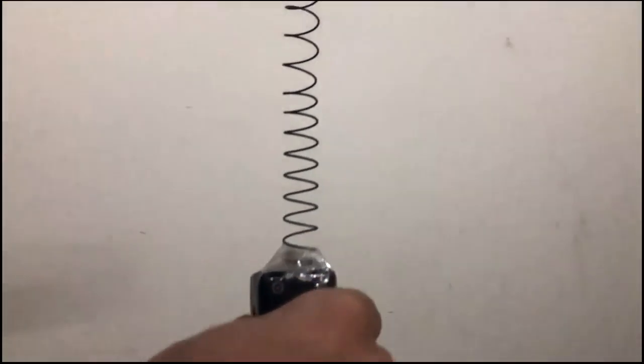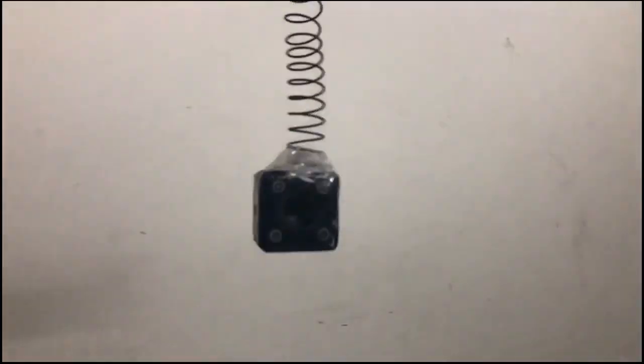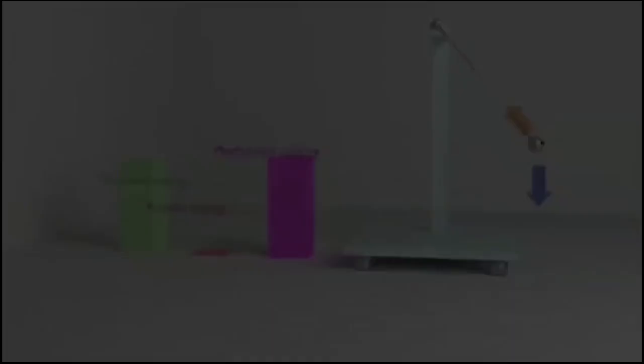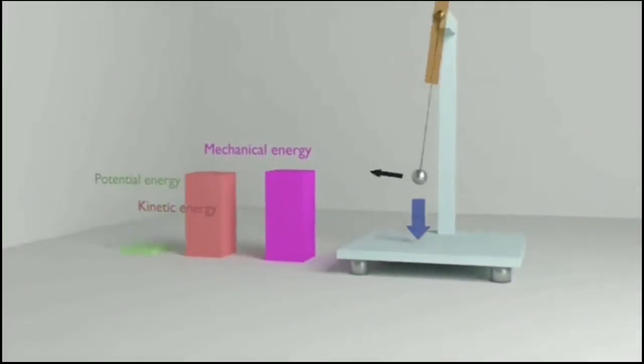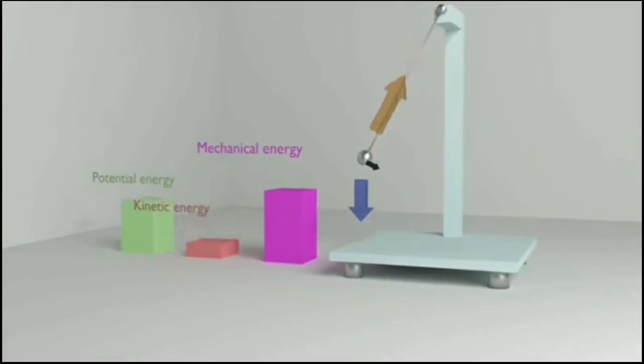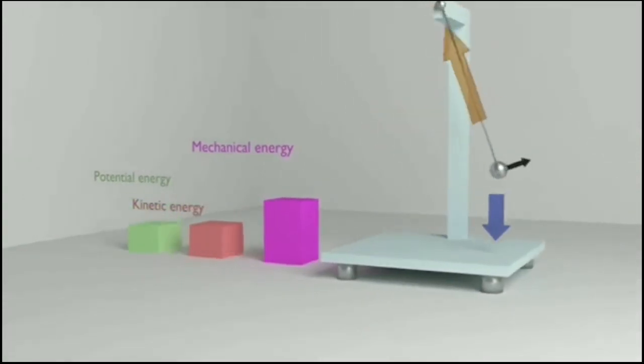In a damped oscillation, dissipative forces like drag and friction cause loss of energy, due to which the system eventually comes to rest. This is an example of damped oscillation where thermal energy is lost.